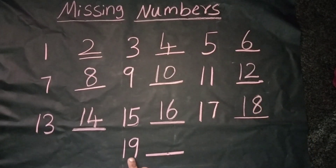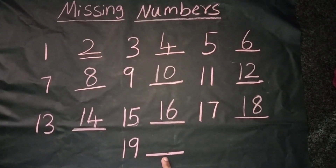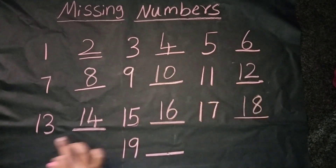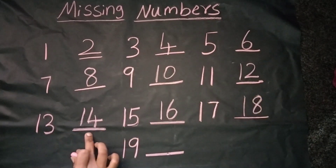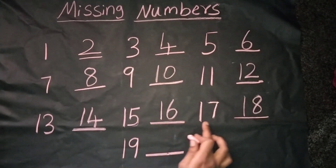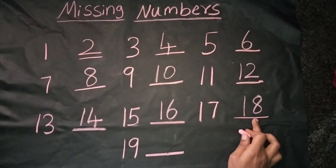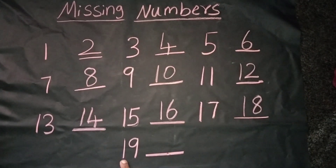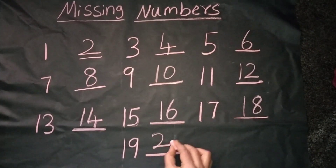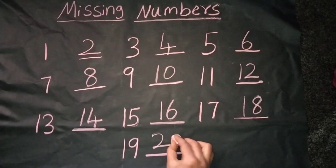We can see the number 19. The next number is — we should count from 11: 11, 12, 13, 14, 15, 16, 17, 18, 19, 20. Yes, it's correct. The number is 20.